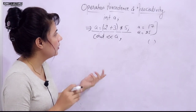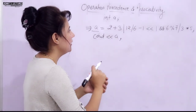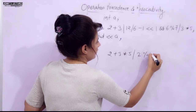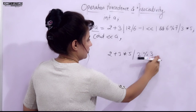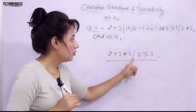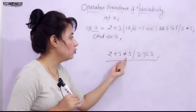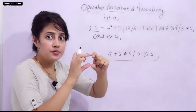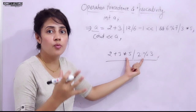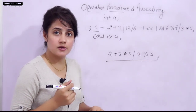Let's take another example: 2 + 3 * 5 / 2 % 3. Here we have plus, multiply, divide, and modulo operators. The multiplicative operators (*, /, %) have higher precedence than plus. But these three have the same precedence among themselves — it's not that multiply is higher than divide or modulo.